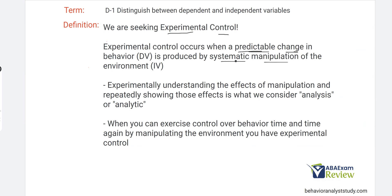Once we can do that, we now have experimental control over the behavior. That's our ultimate goal — to be able to control how behavior responds to the environment. Experimentally understanding the effects of manipulation and repeatedly showing those effects is what we consider analytic. We've got that functional relationship, we have experimental control. You can only say you have experimental control when you repeatedly demonstrate those effects. Just because you manipulated behavior once doesn't mean you have control. Once you can reliably and repeatedly show you have control, then you can officially say you have experimental control.